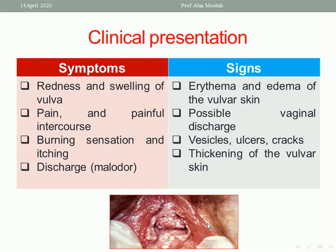The signs include erythema, edema of the vulvar skin, possible vaginal discharge such as creamy white discharge, physical ulcers, cracks, skin thickening of the vulvar skin, dystrophy, vitiligo discoloration, or ulcers. All these are signs of vulvitis.